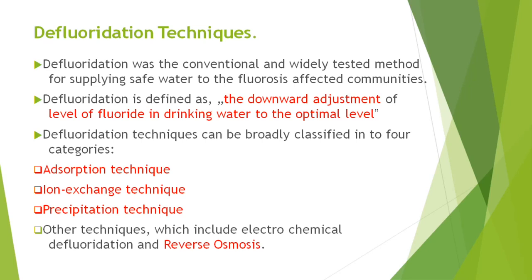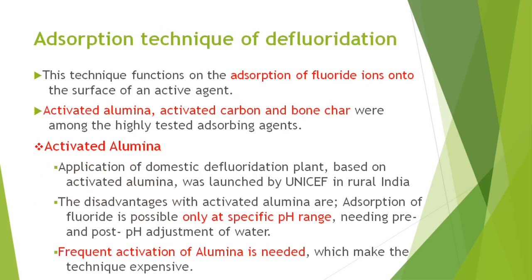Precipitation is similar to our water purification method — we add alum, lime, and bleaching powder and precipitate the fluoride. This precipitation method, also known as the Nalgonda technique, is the most common and is almost the same as water purification, involving flocculation, sedimentation, and filtration. The adsorption technique involves adsorption of fluoride ions onto the surface of an active agent put into the water — not absorption, but adsorption on the surface.